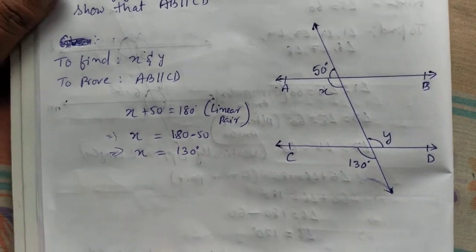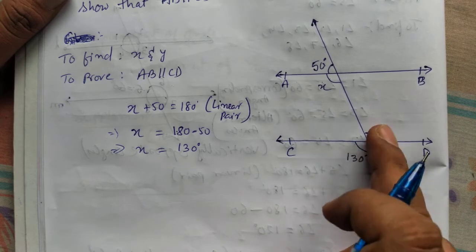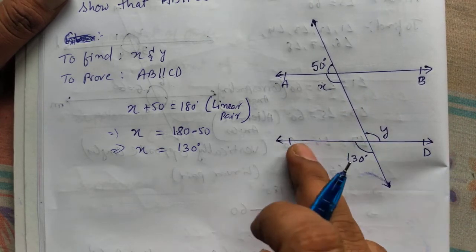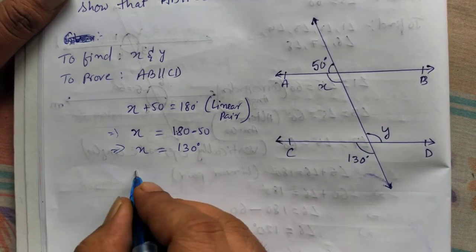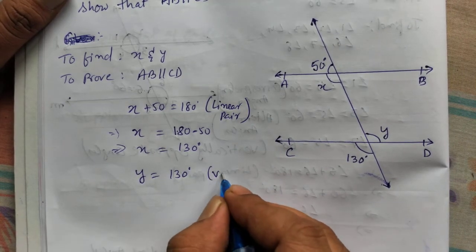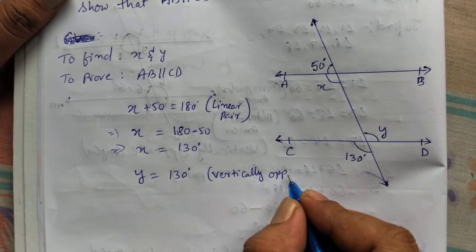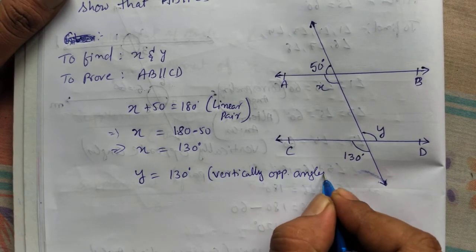Let us find y. y also will be 130 degree. Why this is 130? Because vertically opposite angles are same. Whenever two lines cross, opposite angles are same. So we can say y equal to 130 degree. Reason is vertically opposite angles.